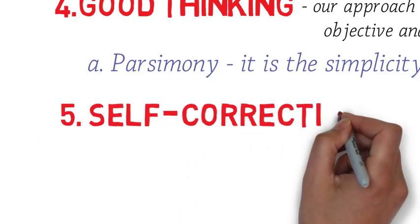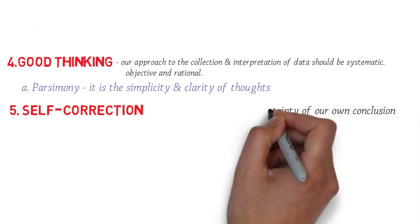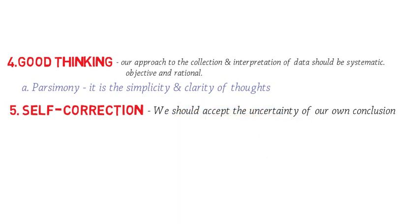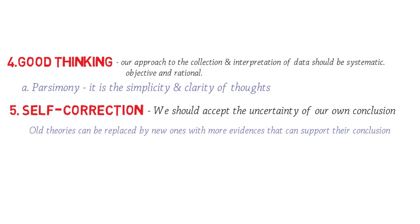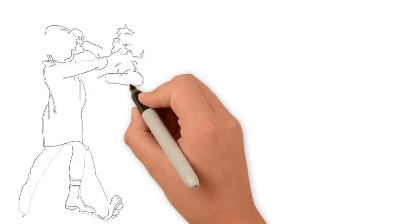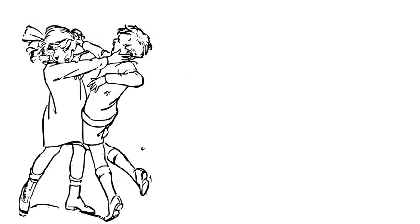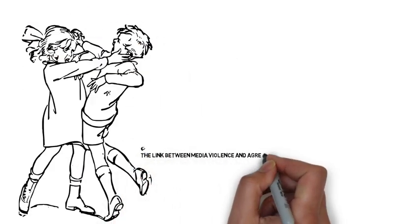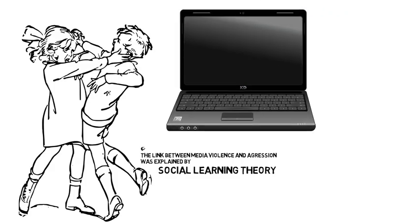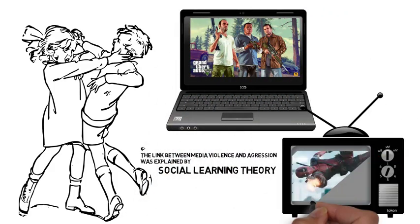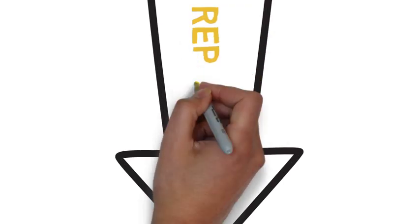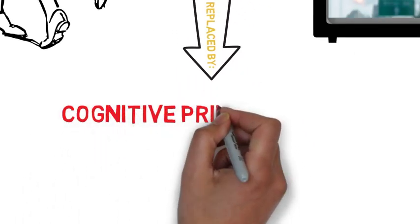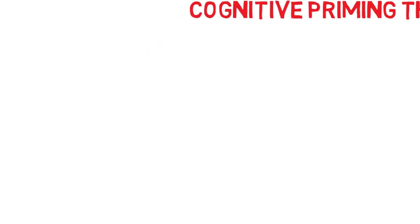Next, we should be open to self-correction. We should accept the uncertainty of our own conclusion. There is a high chance na mapalitan ang mga theory natin ng bago, lalo na pag mas madami silang nag-gather na evidences that supports their conclusion. Just like for example, for more than 30 years, naniniwala tayo na the link between media violence and aggressive behavior was explained by social learning theory. Sabi nila, huwag natin expose ang mga bata sa violent games, movies, or music kasi gagayahin nila yun — i-imitate nila yung mga tao na napapanood nila or sa nilalaro nila.